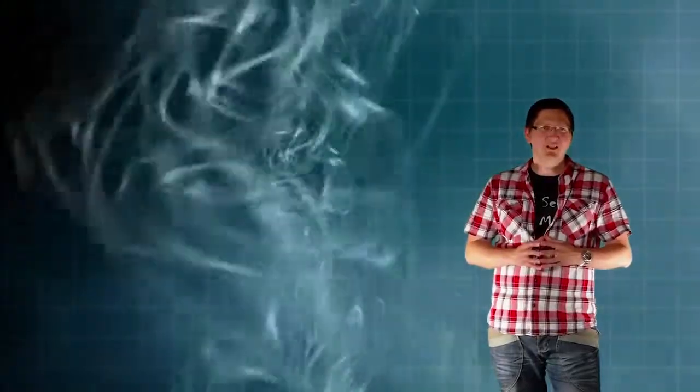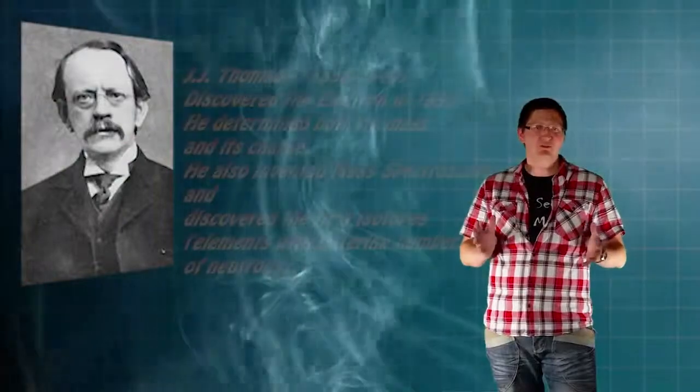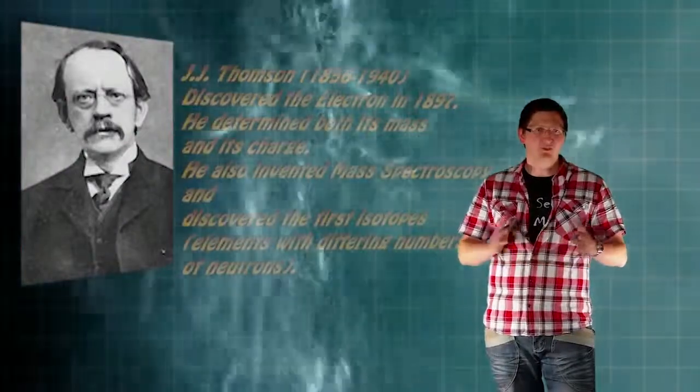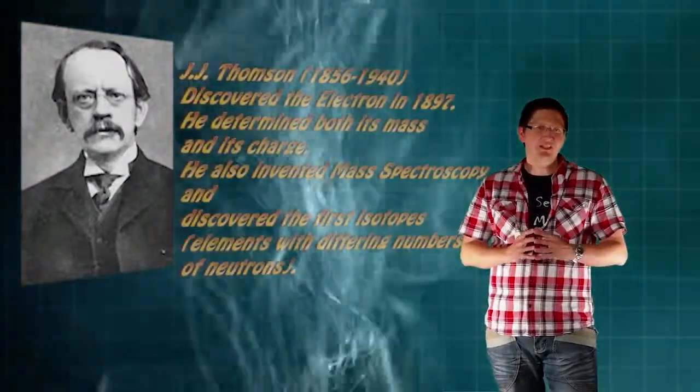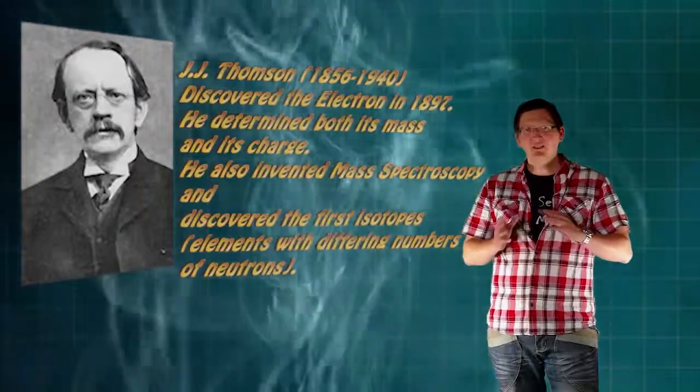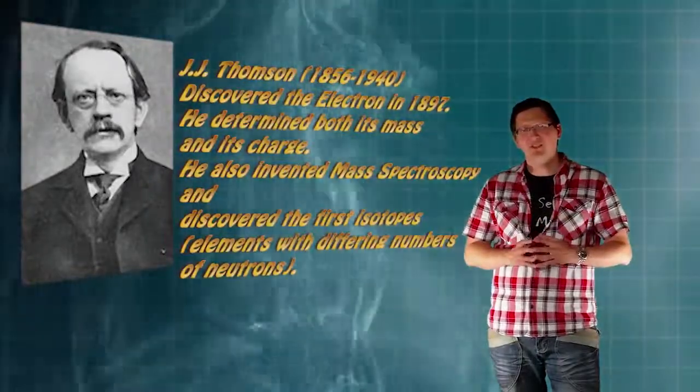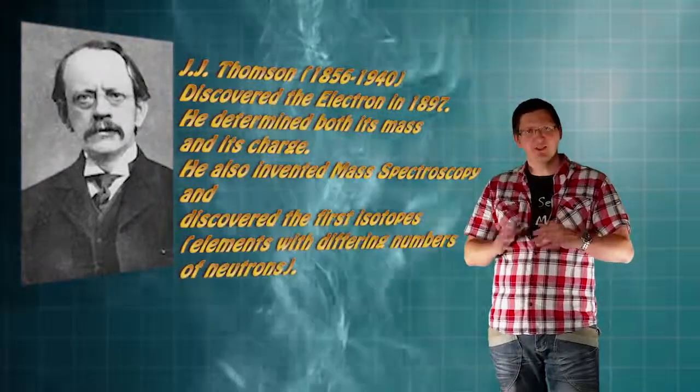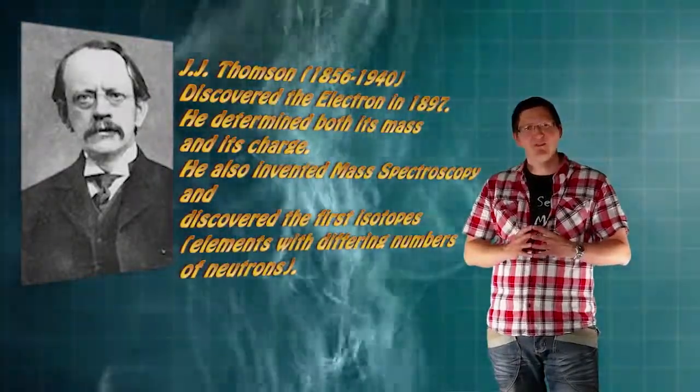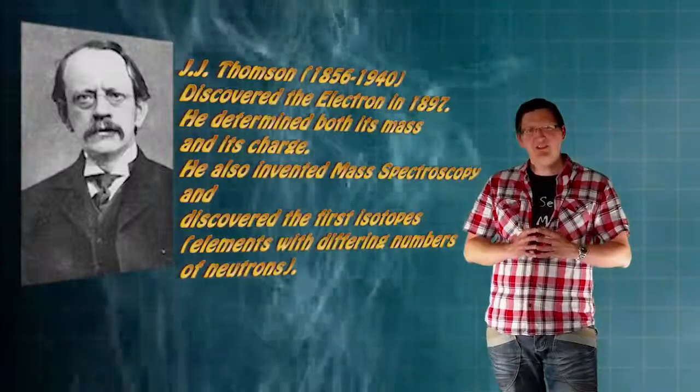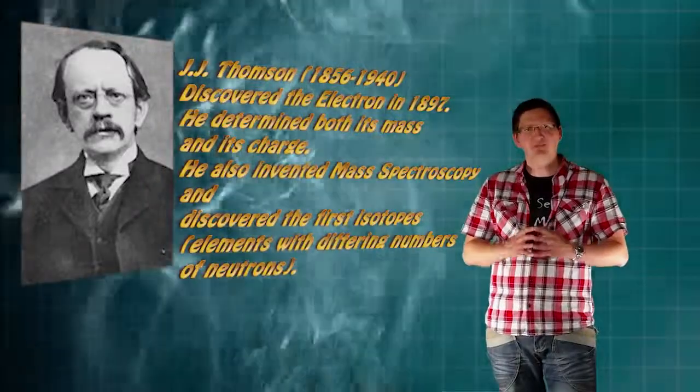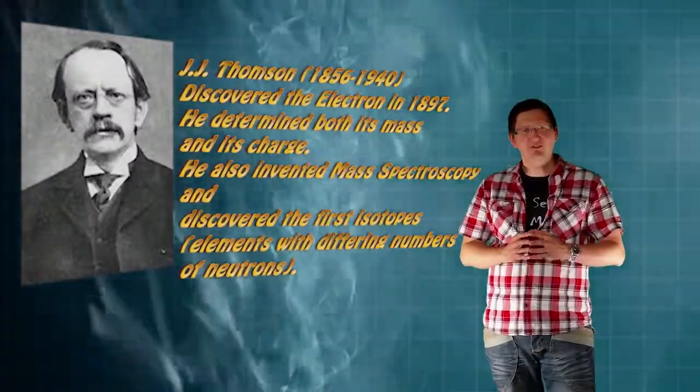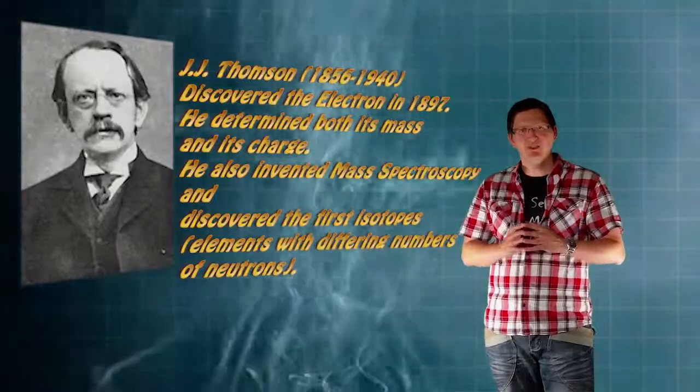In 1897, while studying cathode rays, J.J. Thomson, who was building on the work of other people who developed cathode rays, he noticed that particles that were coming off this cathode ray tube were being deflected by magnetic fields and electric fields.